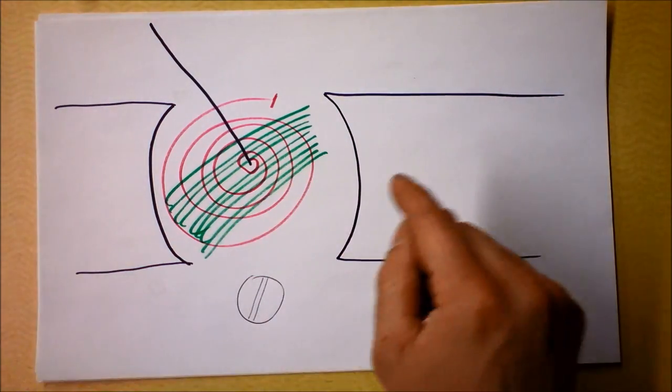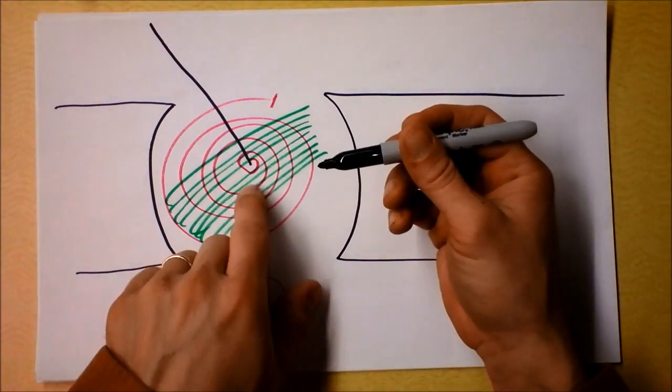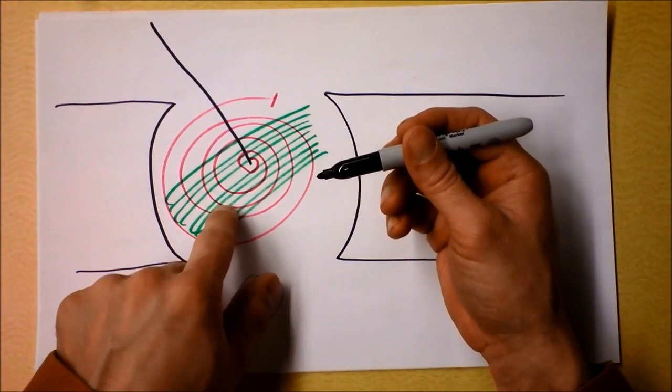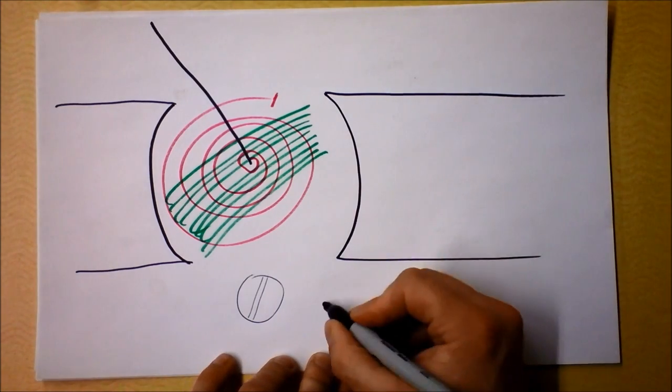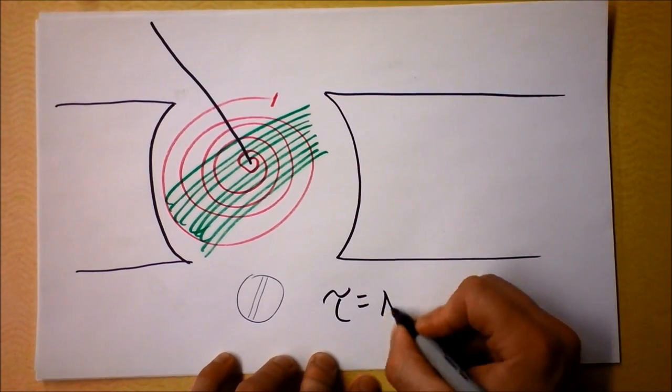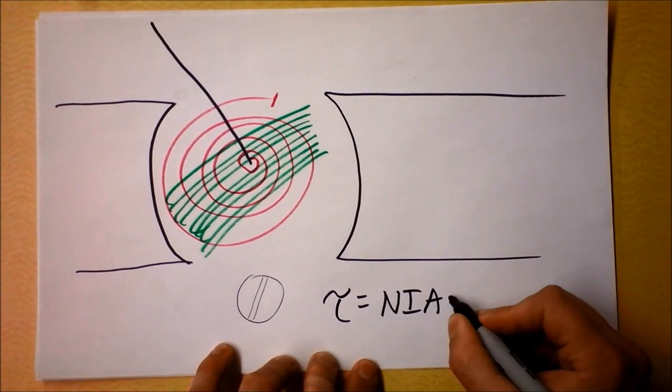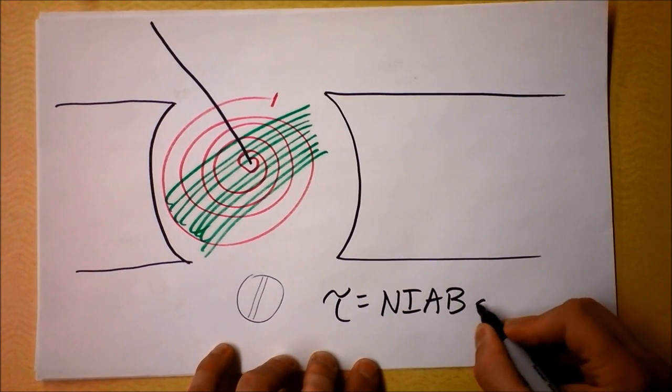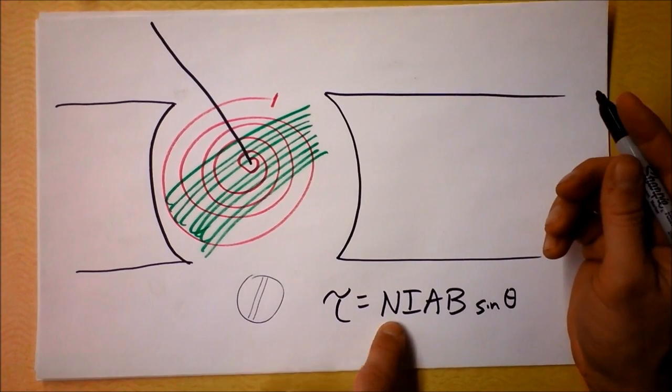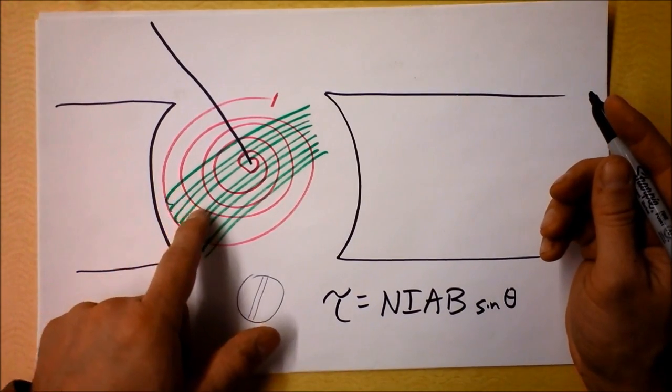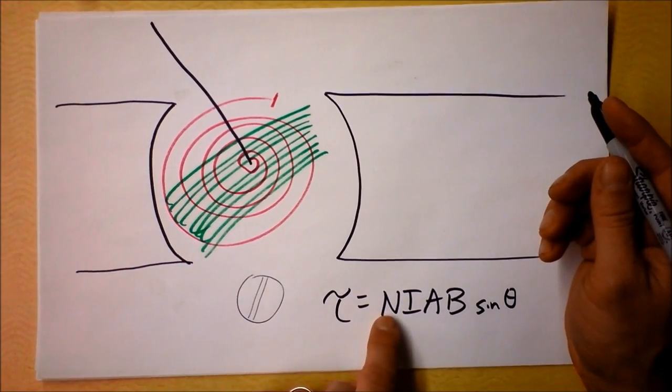So how could I make this be a more sensitive galvanometer, or ammeter, a very sensitive ammeter? Let's look at what that torque is made of. Torque is N times I times A times B times the sine of theta. So I could either have more loops of wire. And you notice those wires were thin. There are a lot of loops of wire right there.